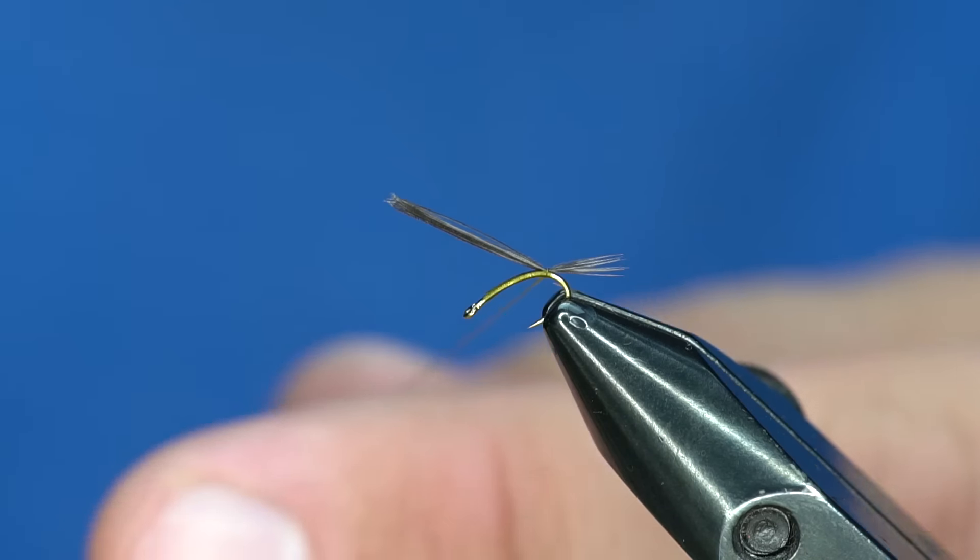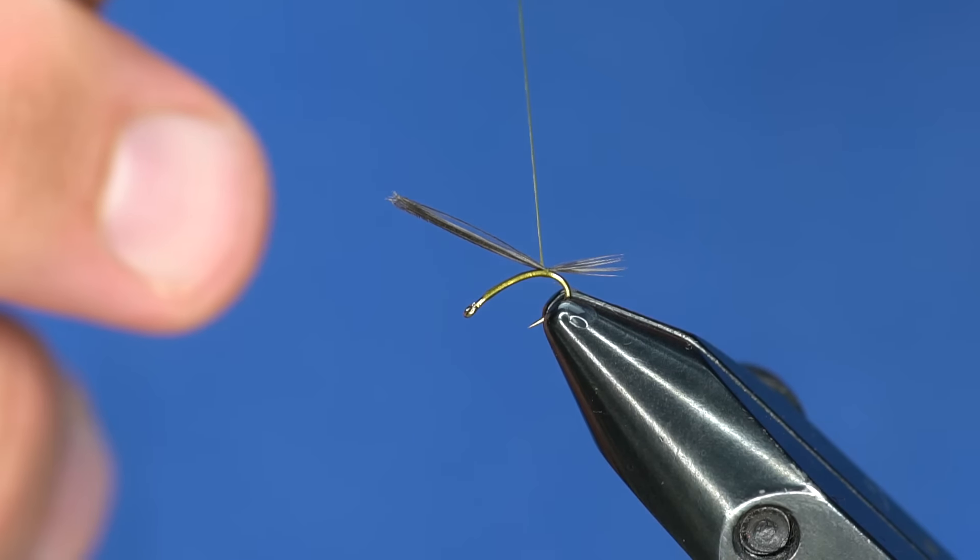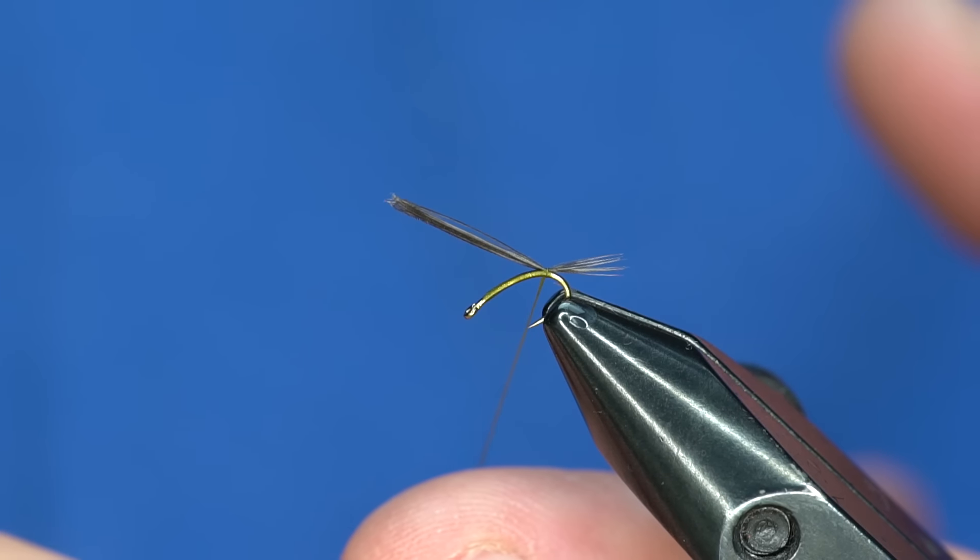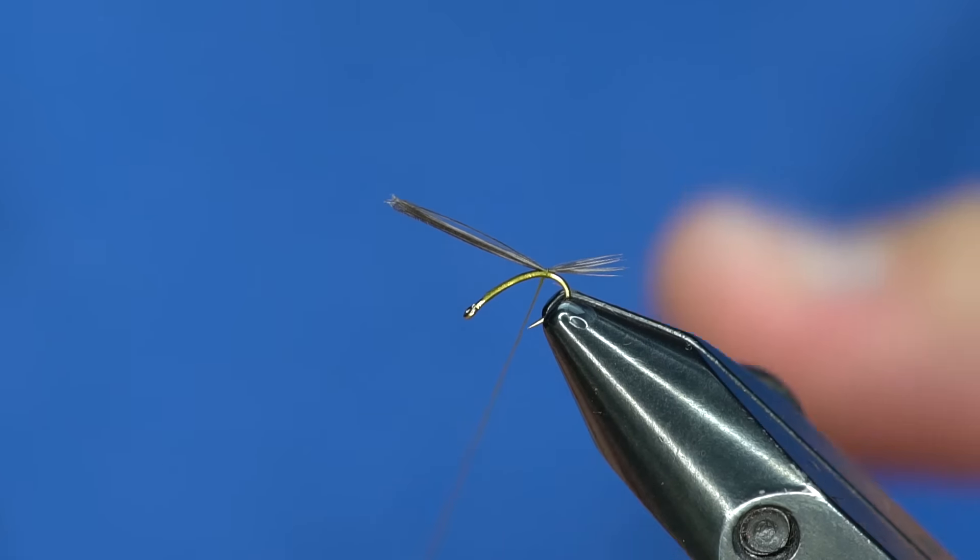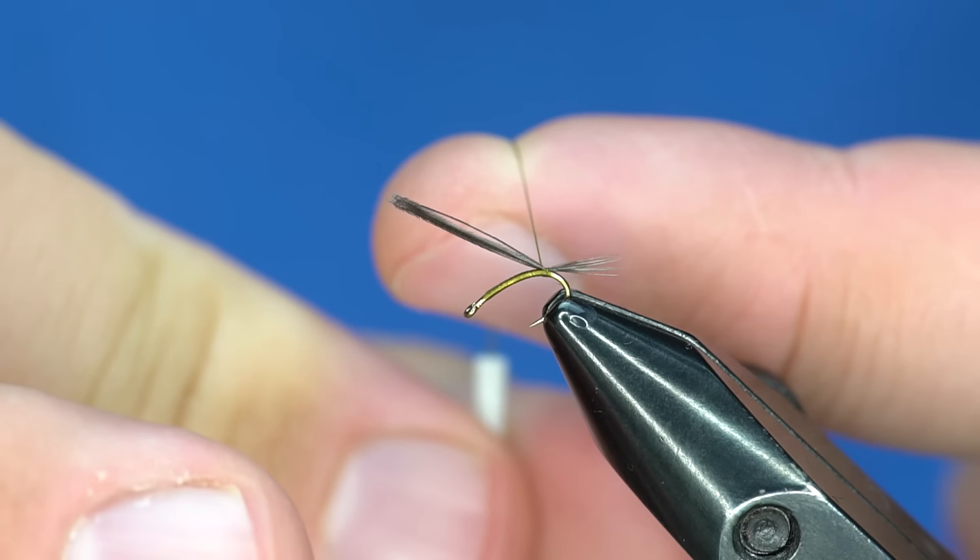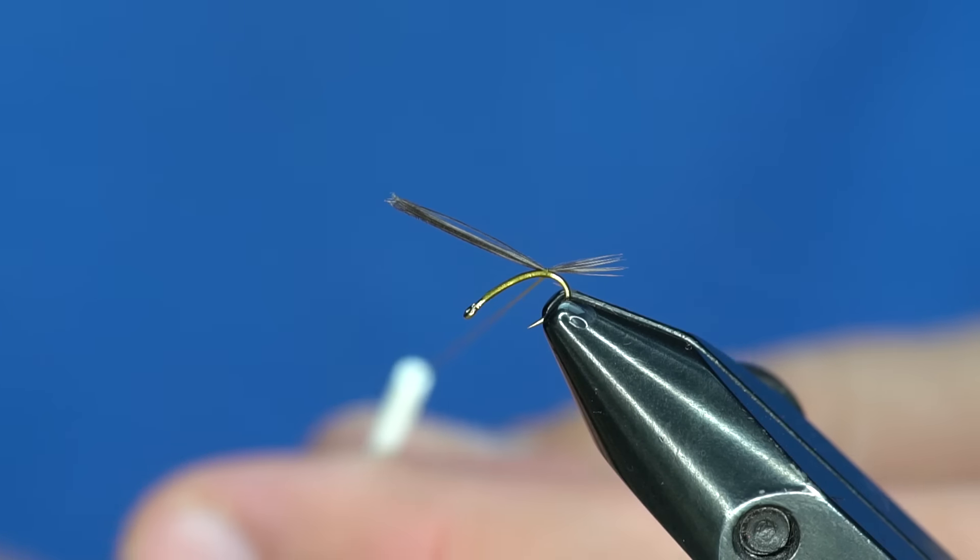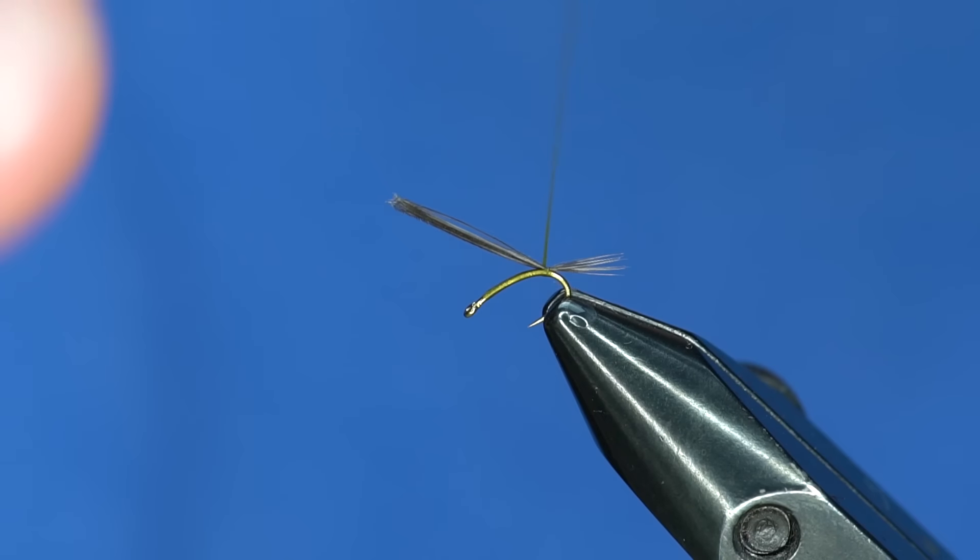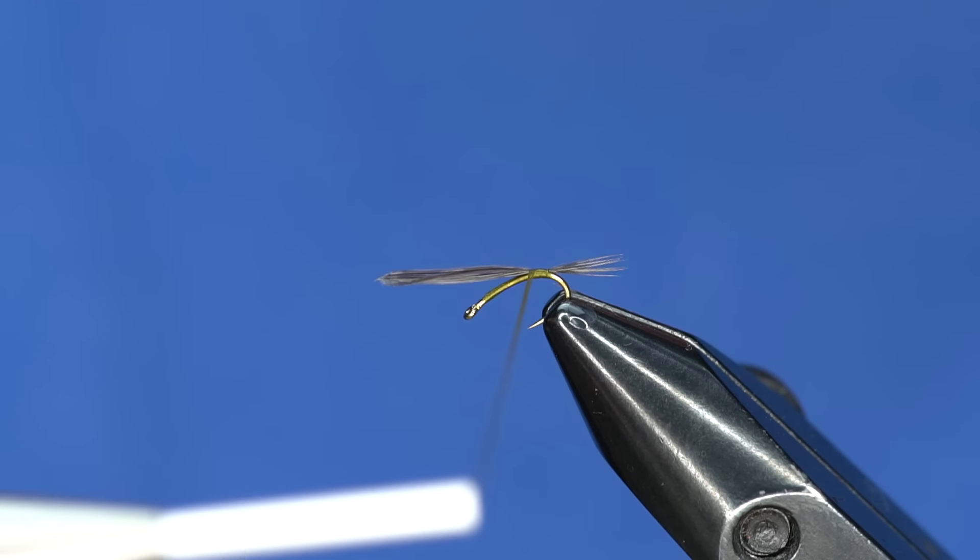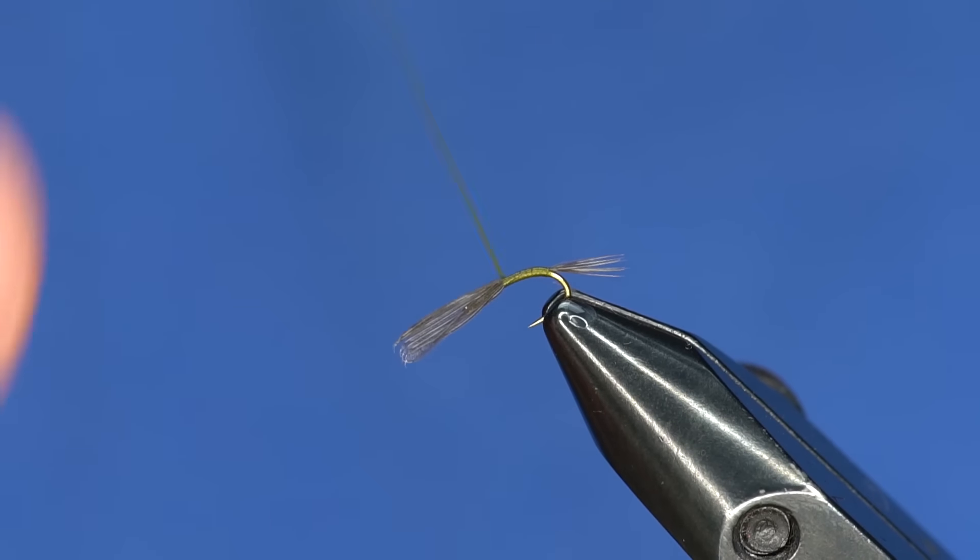Now, what I'm going to do is, as I wrap forward, because I'm right-handed, I'm actually putting more twist in this thread. I'm going to spin the thread counterclockwise quite a few times. One of the easiest ways is just to put your finger like this, and then take your bobbin and twist it. This one actually has a nice ceramic tube that you can grab onto pretty easily. Once I've done that, you can see how nice and flat that thread's laying down.